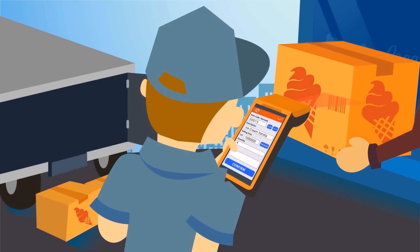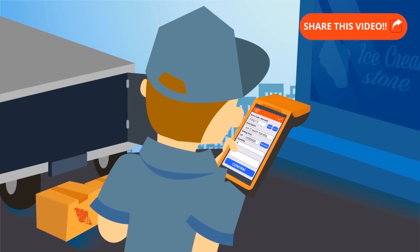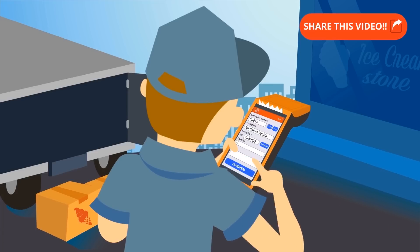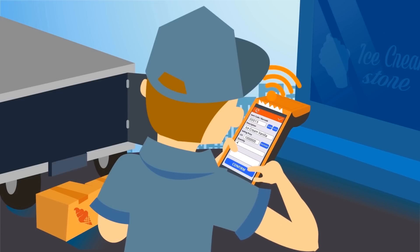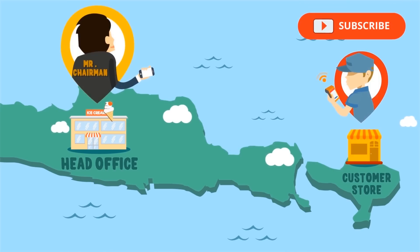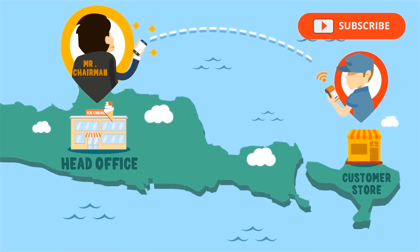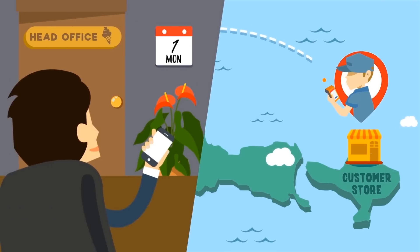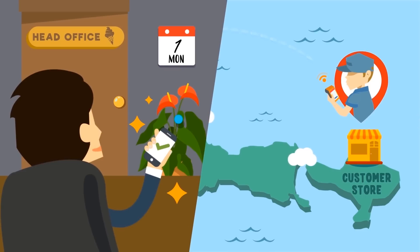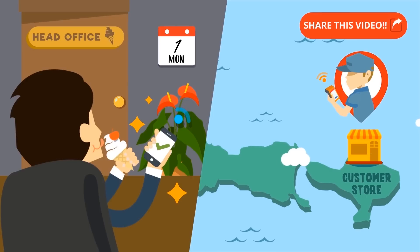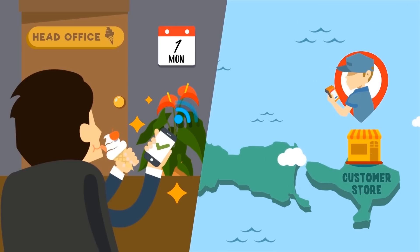iReap enables sales teams to record transactions real-time, either using a scanner or keyboard. All transaction data are sent and consolidated real-time to head office. No more information delay at head office. Now you can access all sales and inventory reports real-time as soon as they are keyed in.